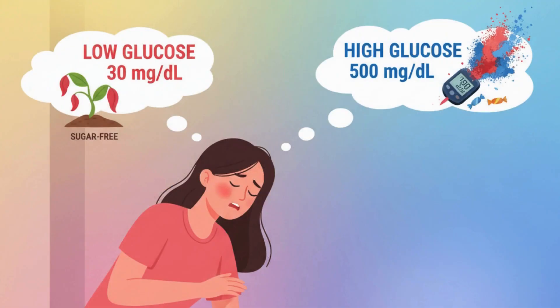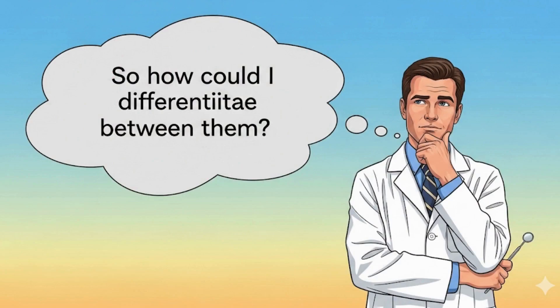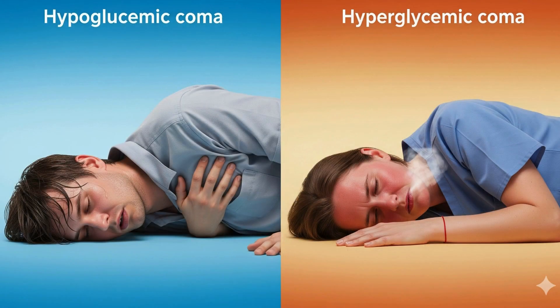The diabetic patient may start to lose consciousness and exhibit what is called diabetic coma, either due to low blood glucose level or due to high glucose level. Hypoglycemic coma is the more dangerous one, as the very low level of glucose in the blood may cause permanent damage to many organs. It is caused by excess insulin in comparison to the food taken, occurs rapidly, and the patient looks sweaty with shallow breathing and a rapid, bounding pulse.